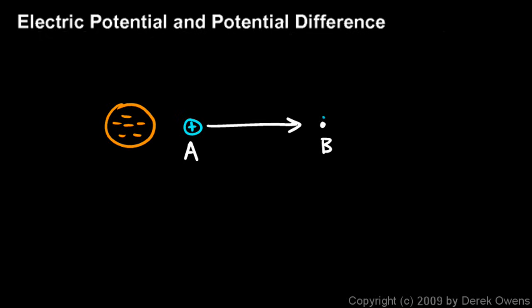And that particle sitting here at B is at a point of higher electrical potential, a point of higher potential energy in the electric field. And that's a key concept. There's a difference between points A and B. One point represents a point of higher potential energy than the other.